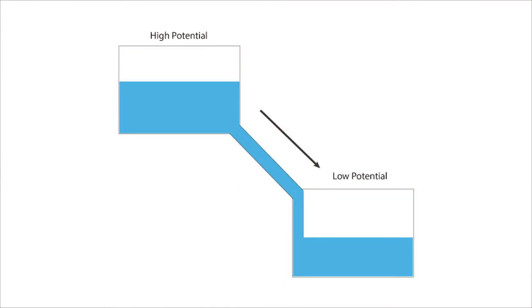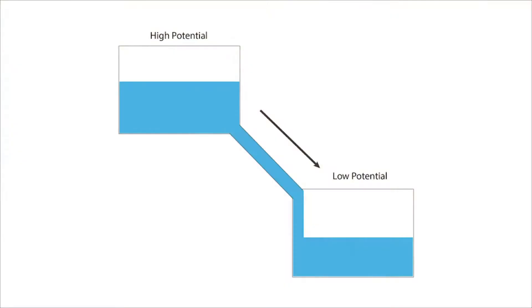This is due to the energy supplied by gravity. As the water flows down to the lower tank it loses potential energy in the process, because the tank at the bottom has less gravity and thus less potential energy. Once it reaches the lower tank it has a lower potential energy than the water in the higher tank.